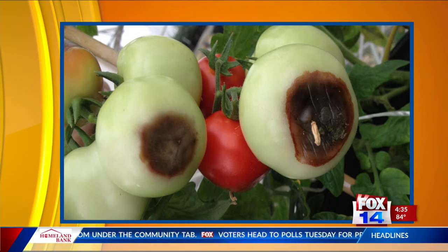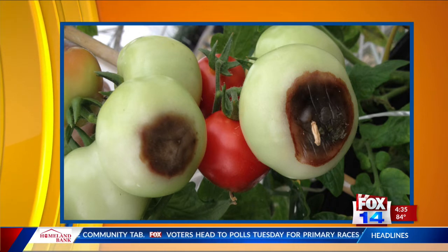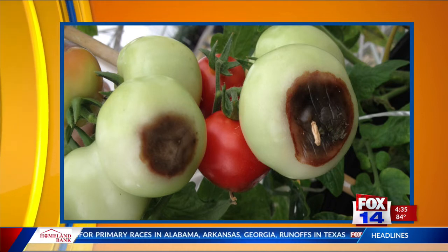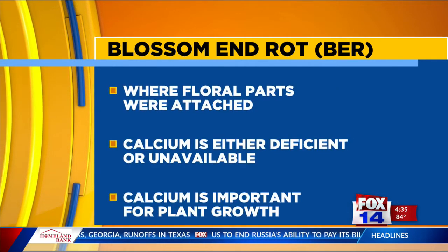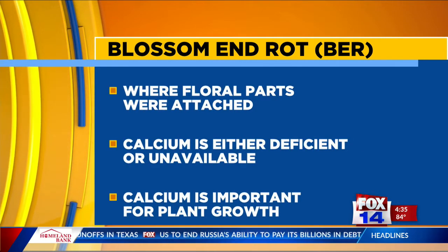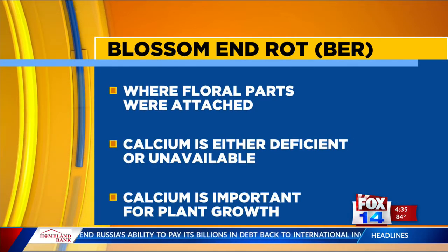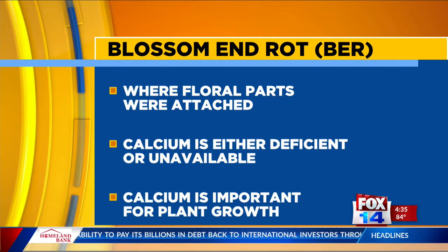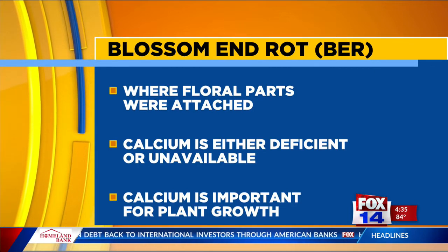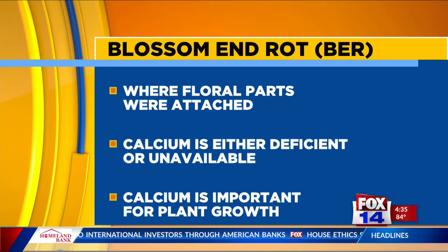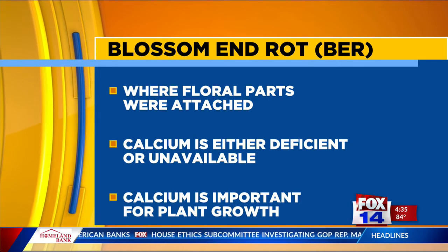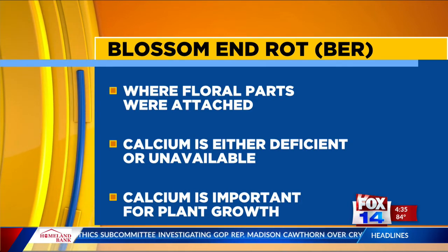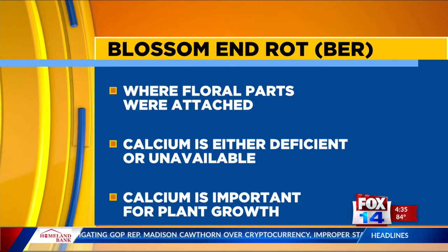The blossom end is where the floral parts were attached, and that black watery lesion starts to form. We now know that this is a calcium issue — calcium is either deficient or unavailable. We'll get into the difference between calcium deficiency and unavailability in just a second. Calcium is important for plant growth, so this becomes an important situation for gardeners when a lot of their fruit are coming in with blossom end rot.